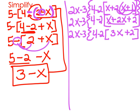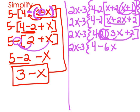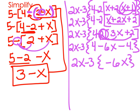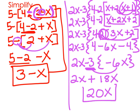Now I need to distribute this 2, and it's a minus 2, so pay attention to that. Taking negative 2: negative 2 times 3x would be minus 6x, and negative 2 times 2 would be minus 4. So now I have 4 minus 6x minus 4. The 4 and the minus 4 cancel each other out. So I've got 2x minus 3 and the negative 6x. Now distribute this negative 3 - I always distribute it with the sign. Negative 3 times negative 6x is plus 18x, and 2x plus 18x makes 20x. That is fully simplified.